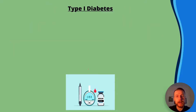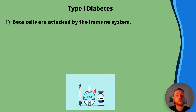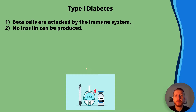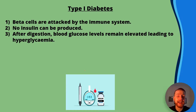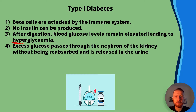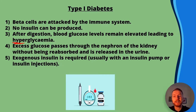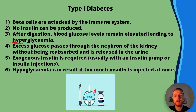Type 1 diabetes is frequently tested in AQA A-level biology. In type 1, beta cells are attacked by the immune system, so no insulin can be produced. After digestion, blood glucose levels remain elevated, leading to hyperglycemia — hyper meaning higher blood glucose. Excess glucose passes through the nephrons of the kidney without being reabsorbed, so glucose in a patient's urine is one way we detect diabetes. Exogenous insulin — from outside the body — is required, typically administered via an insulin pump or injections. Hypoglycemia, low blood glucose, can result if too much insulin is injected.